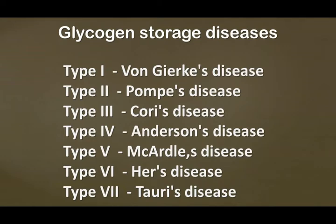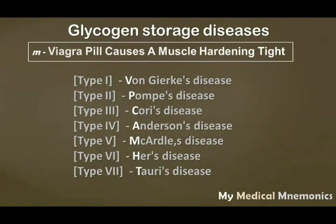To avoid confusion about the sequence, there is a simple and very nice mnemonic: 'Viagra pill causes a muscle hardening tight.' This sentence will surely stick in your mind. V for Viagra — Von Gierke's disease; P for pill — Pompe's disease; C — Cori's disease; A — Anderson disease; M in muscle — McArdle's disease; H in hardening — Hers disease; T in tight — Tarui's disease.